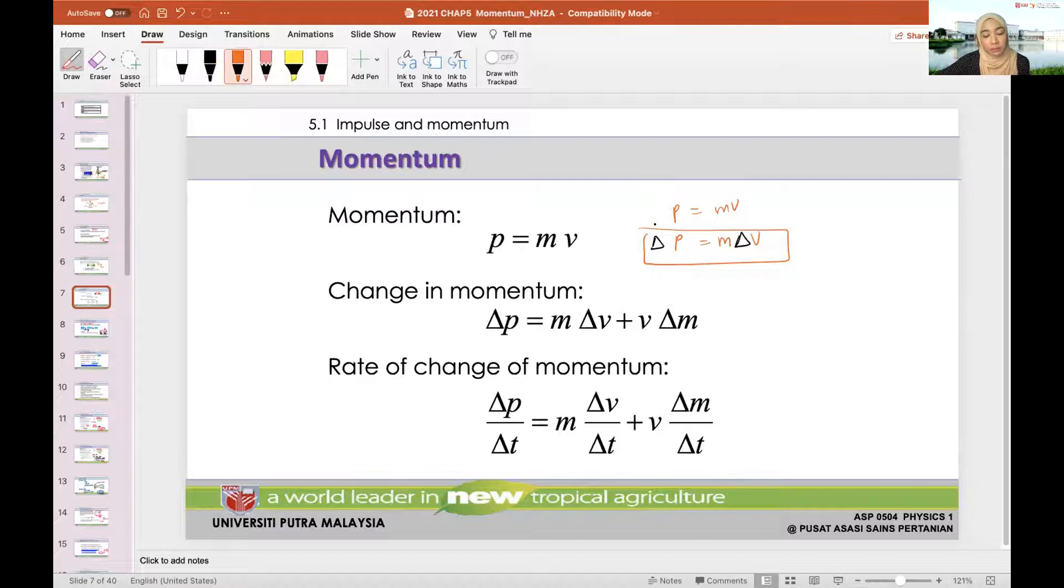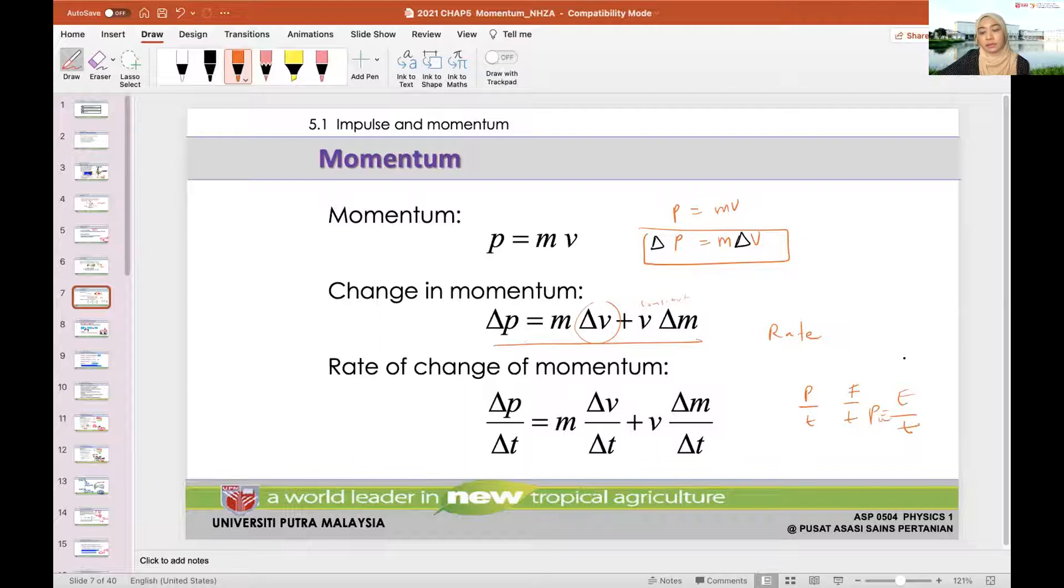When you have a delta in your P, it means you have a change in P. That change has to be represented on the right-hand side as well. You just have to pick whether it's going to be the change in mass or the change in velocity. Since you guys are not aliens, we're going to assume that the only change we can have is velocity. The change in velocity is what we're aiming for when talking about the change in momentum.